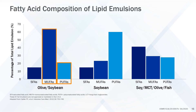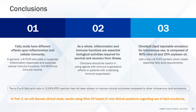In conclusion, fatty acids have different effects upon inflammation and cellular immunity. In general, omega-6 PUFA, high in soybean oil, stimulate or suppress inflammatory responses and suppress cellular immune functions. N9 MUFA, high in clinolipid, are neutral upon inflammation and cellular-mediated immunity. As a whole, inflammation and immune functions are essential biological activities required for survival and recovery from illness. Clinicians should be careful in using agents with immune-suppressive effects in patients with underlying immune suppression.